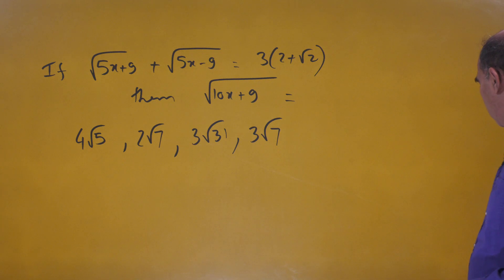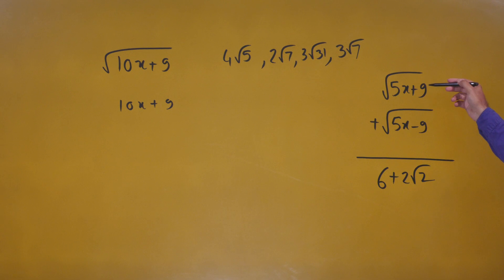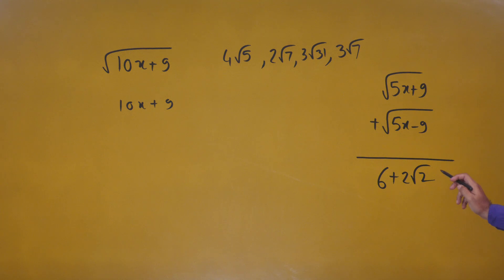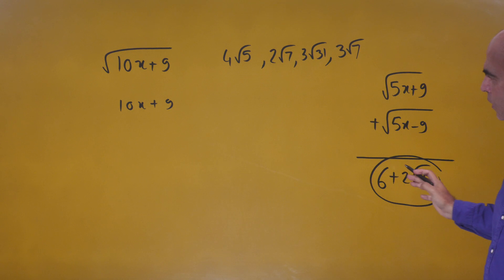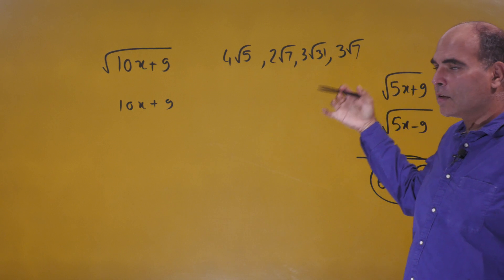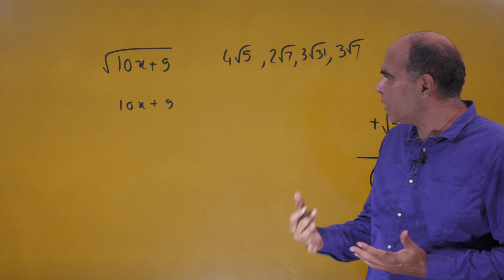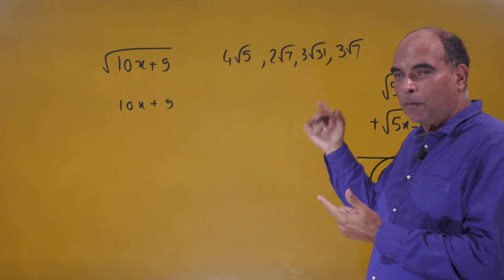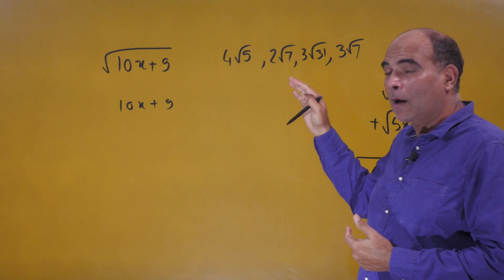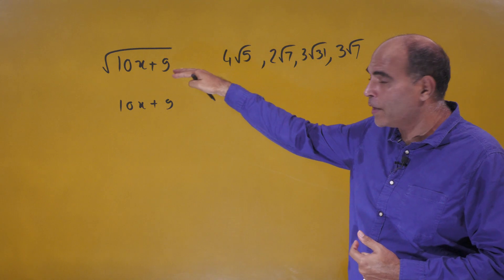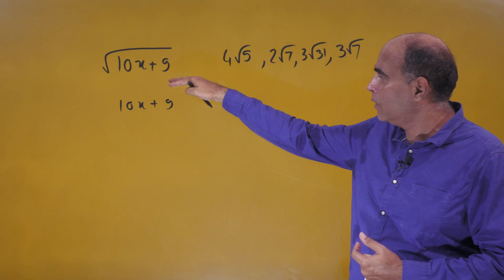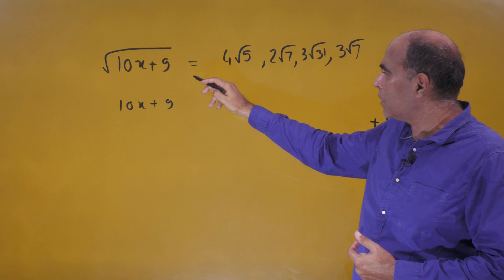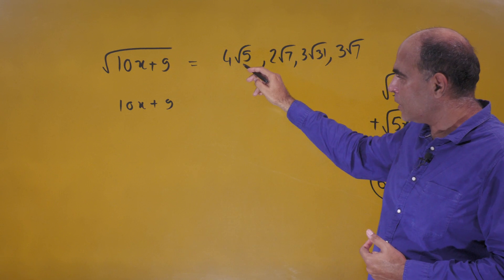So we have √(5x+9) + √(5x−9) = 6 + 2√2. Given this and the options, we should not go algebraic on this question. Instead, let's try plugging in the answer options and see what happens.